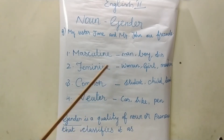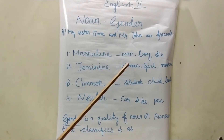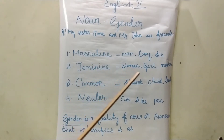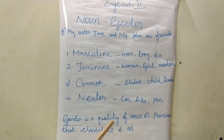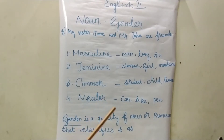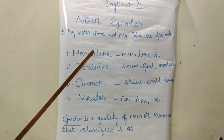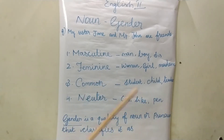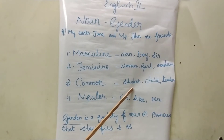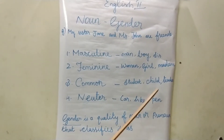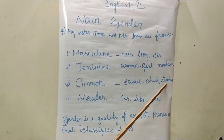Feminine gender refers to female — woman, girl, madam. The next is common gender. Common gender means it refers to either male or female. For example: student — a student may be a boy or a girl. Also child, teacher, doctor — these are common gender.